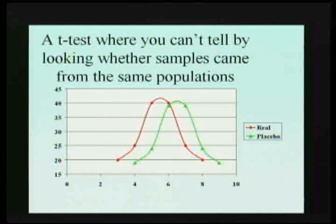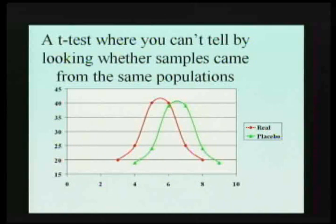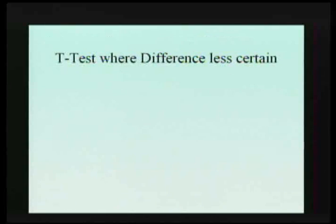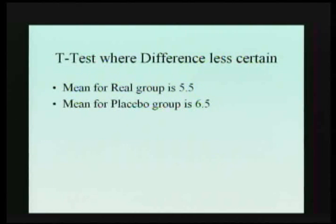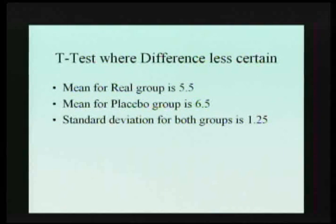Let's try this one. Just by eyeballing this, I'm not sure if you can really tell. There's more overlap. There's a smaller difference between the two groups. Here's a t-test where there's less certainty. The mean for one group is 5.5. The mean for the other one is 6.5. So there's only like one point difference between the two groups. Standard deviation is 1.25.